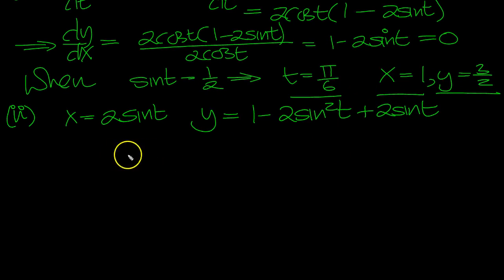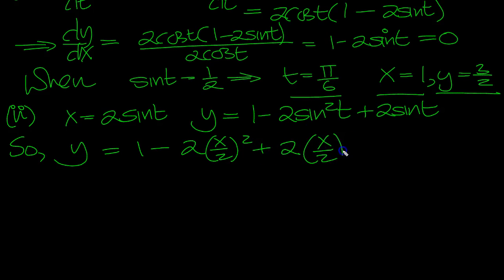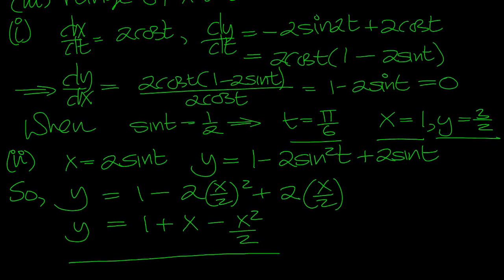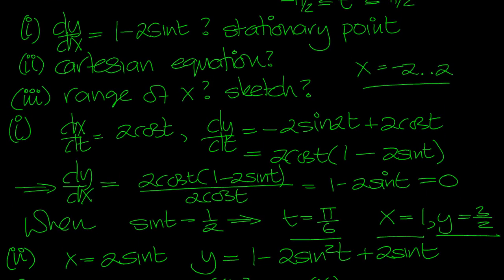So, y equals 1 minus 2 times (x/2) squared, plus 2 times (x/2). That gives us 1 plus x minus x²/2. Okay, there's the Cartesian equation. What's the range of x?